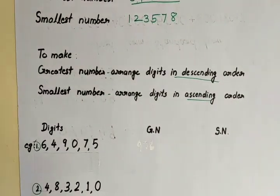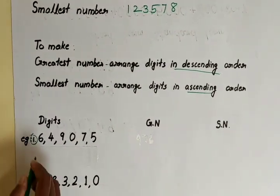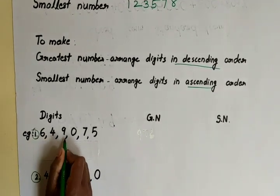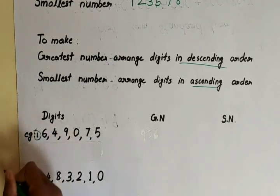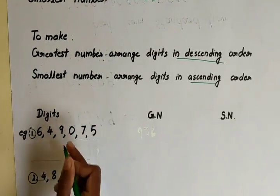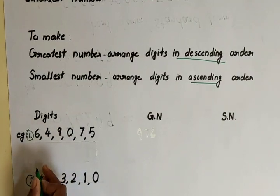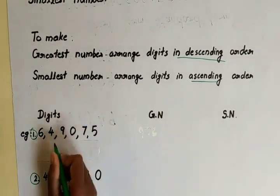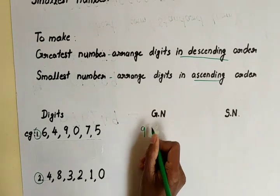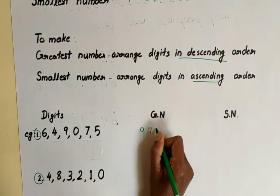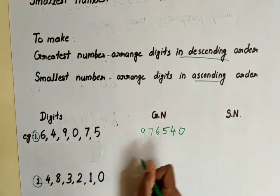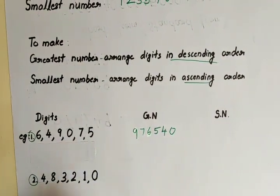Now let us try some examples. First example — digits are 6, 4, 9, 0, 7, 5. To write the greatest number, arrange the digits in descending order, that means from biggest to smallest. The biggest digit is 9, next is 7, next is 6, next 5, 4, 0. So this is the greatest number.